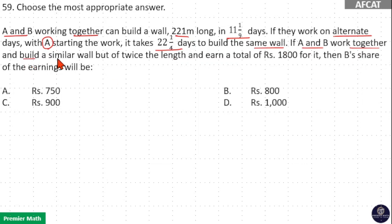If A and B work together and build a similar wall but of twice the length and earn a total of rupees 1800 for it, then B's share of the earnings will be: The work completed in 11 and 1/9 days equals work completed in 22 and 1/4 days, because in both cases the work is 221 meters.